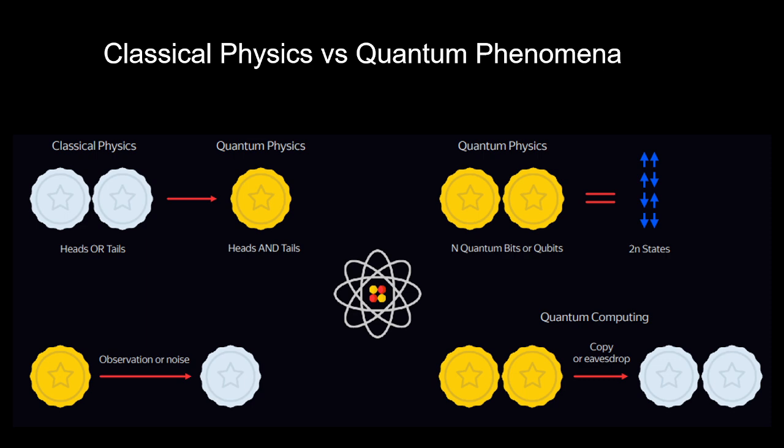A quantum computer uses its own unit of data measurement, which is called the qubit. It also represents 1s and 0s, but it can also represent 1 and 0 at the same time as a third state — so 1, 0, and then a combination of 1 and 0.